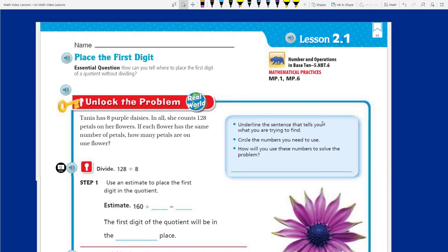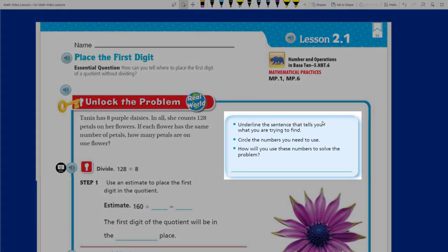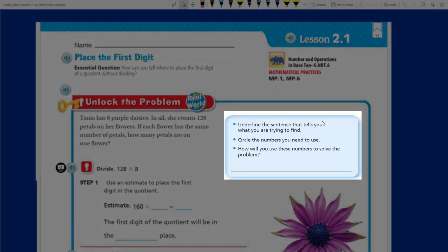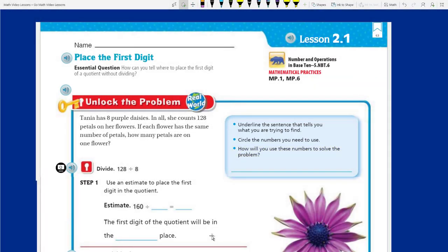That's right, my friends. It's real world, baby. Real world. Yes, look at here. It says Tanya has 8 purple daisies. In all, she counts 128 petals on her flowers. If each flower has the same number of petals, how many petals are on one flower? Okay. This sounds like you're straight out of division problem. Now, let's go ahead and take a look at our little blue shaded box. Our little helper box.